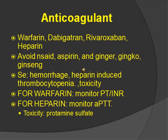Anticoagulants stop clotting. Examples are warfarin, dabigatran, rivaroxaban, and heparin. They're used for strokes, myocardial infarctions, DVTs, DIC, cardiac cath, and pulmonary embolism. Avoid NSAIDs, aspirin, ginger, ginkgo, and ginseng due to increased bleeding risk. Side effects include bleeding, hemorrhage, heparin-induced thrombocytopenia, and toxicity. For warfarin, monitor PT and INR. For heparin, monitor aPTT. Heparin antidote is protamine sulfate. For heparin injections, administer in the abdomen two inches from the umbilicus, rotate sites. Patients should wear a med alert bracelet, follow bleeding precautions, and avoid alcohol.